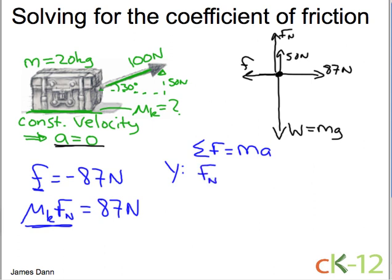We have the normal force going up, we have 50 newtons going up, and then we have the weight going down. And since it's not accelerating in the vertical direction, the acceleration is zero, and therefore that whole side is zero.